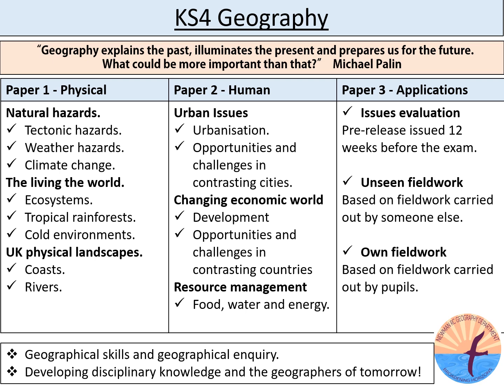Section C of Paper 1 focuses on UK physical landscapes. Our students will explore the processes and landforms developed on different types of coastline, as well as how and why coastal areas are protected. When studying rivers, students will explore how the river changes along the long profile from source to mouth, developing their knowledge of the processes taking place at each stage and the landforms created. Students will also learn about how and why areas are protected from flooding.